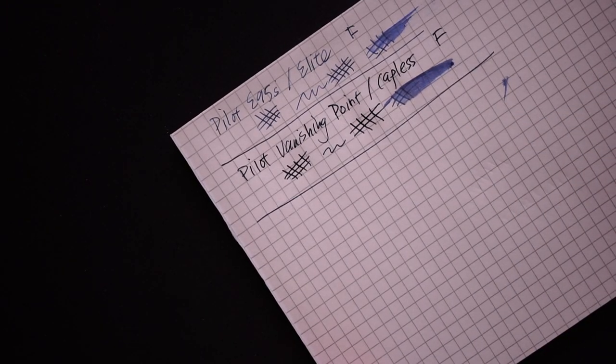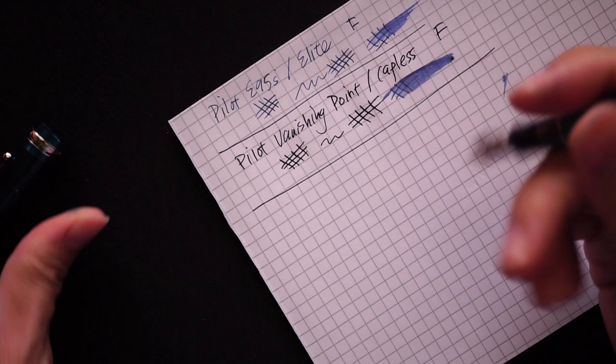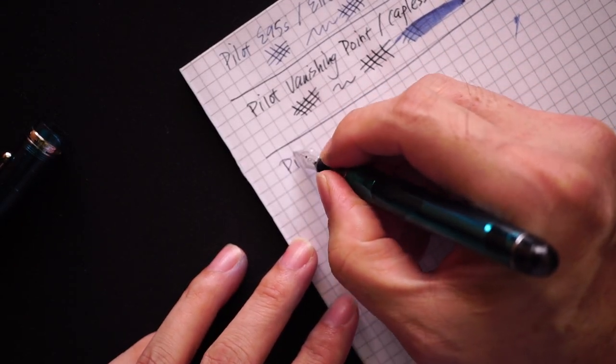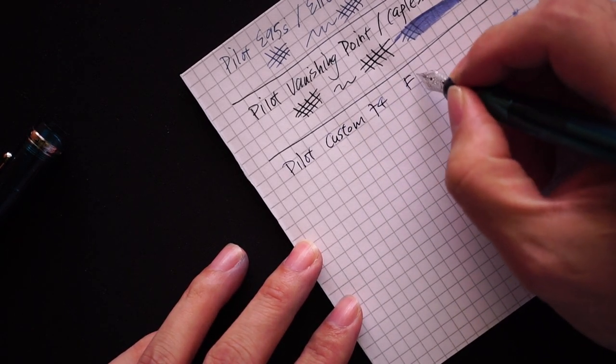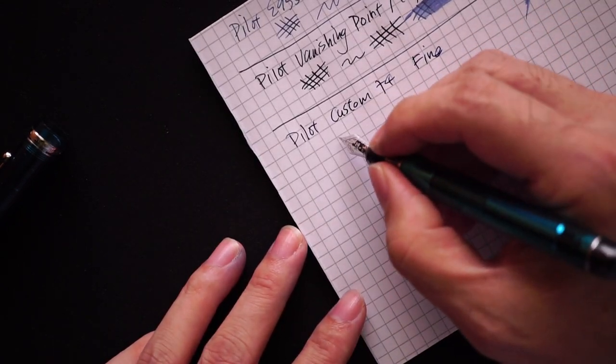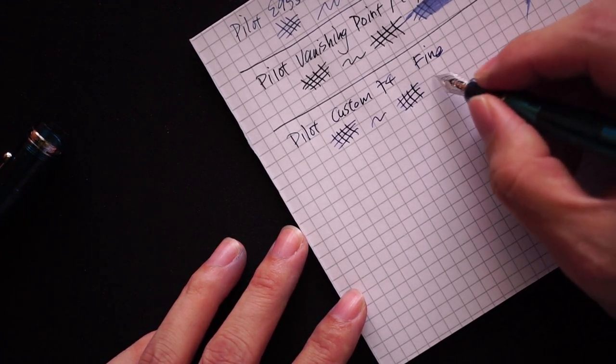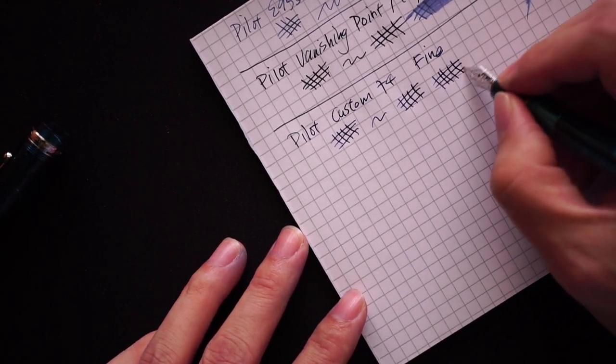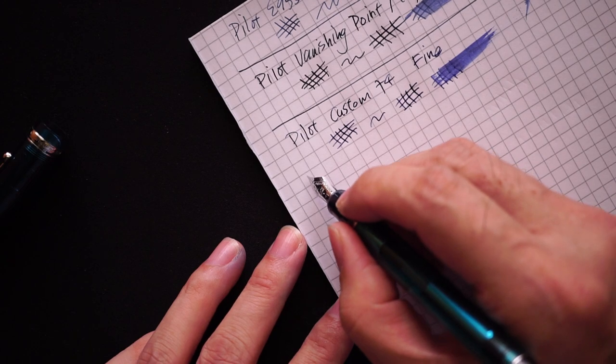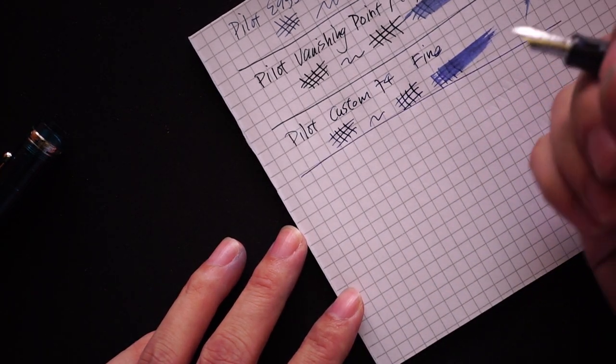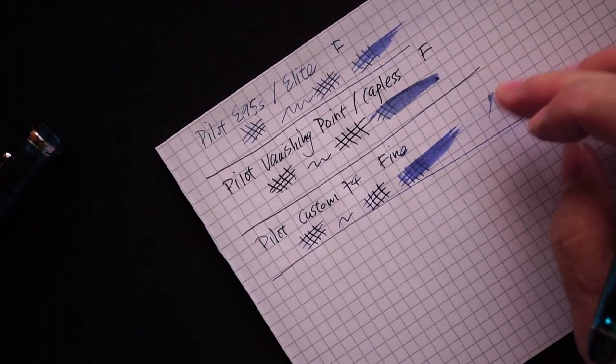Next pen I'm going to be looking at will be the Custom 74. I like fine, so basically this is also fine. It is pretty fine. It is a nice feeling nib that's smooth with again a tiny bit of feedback. Pretty similar to the E95S in terms of feel.